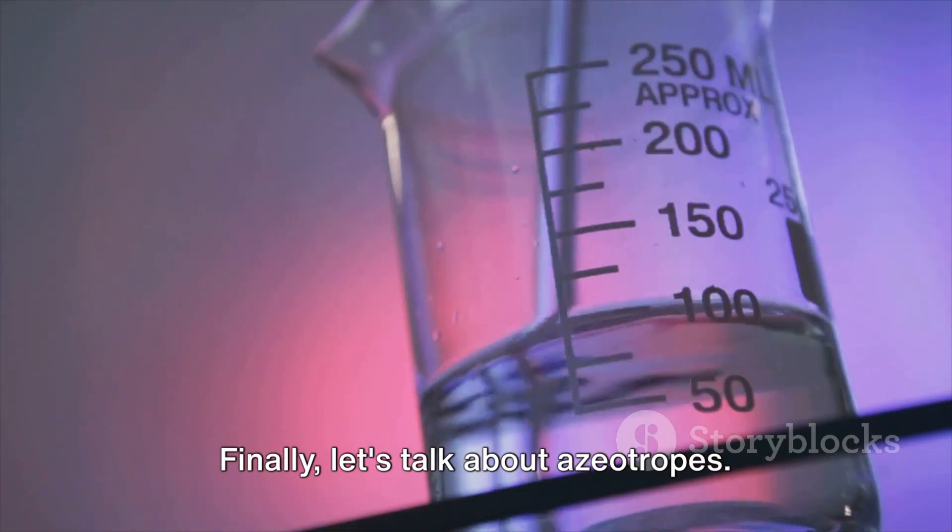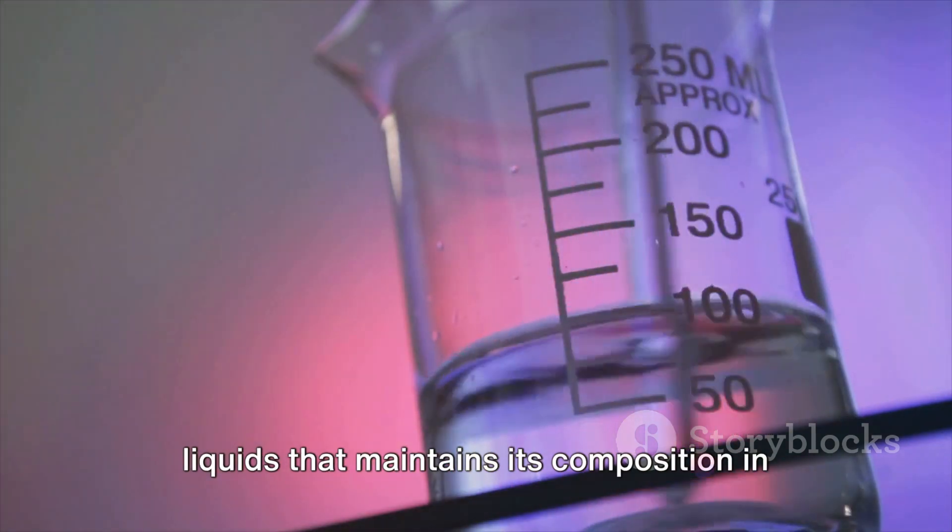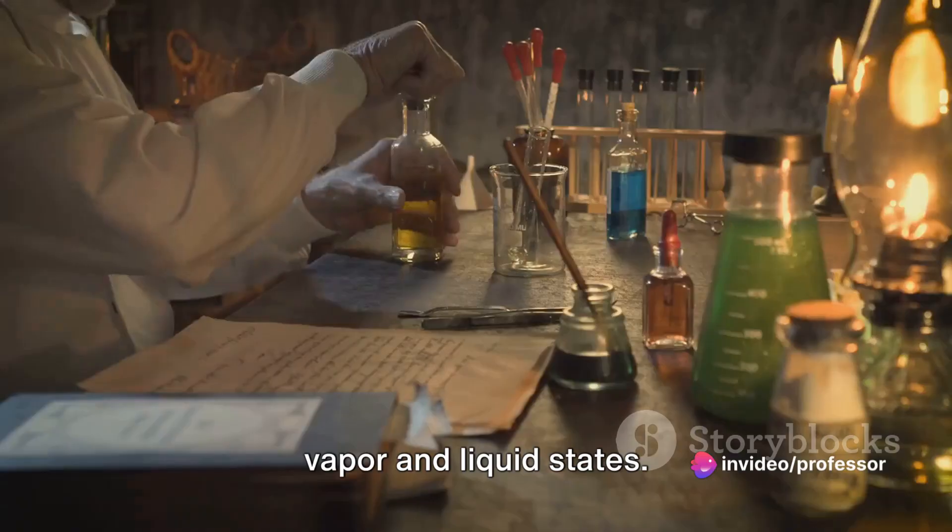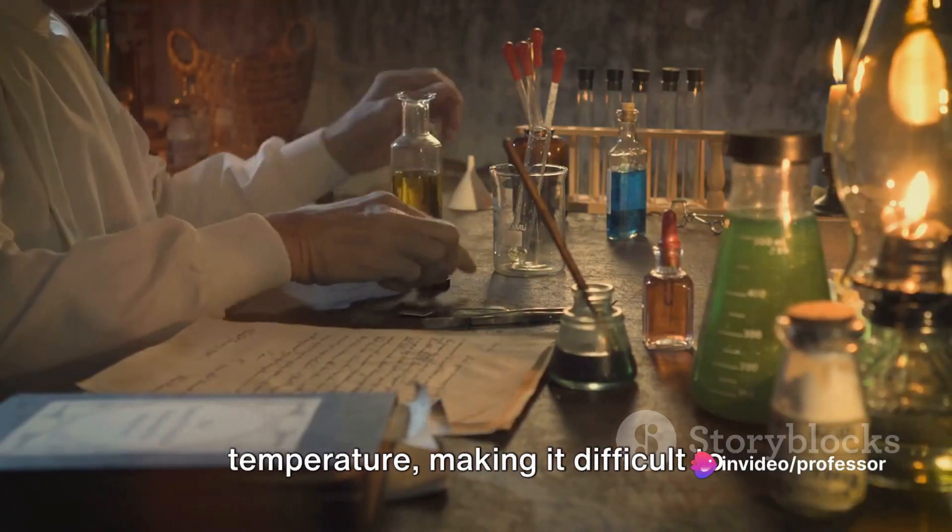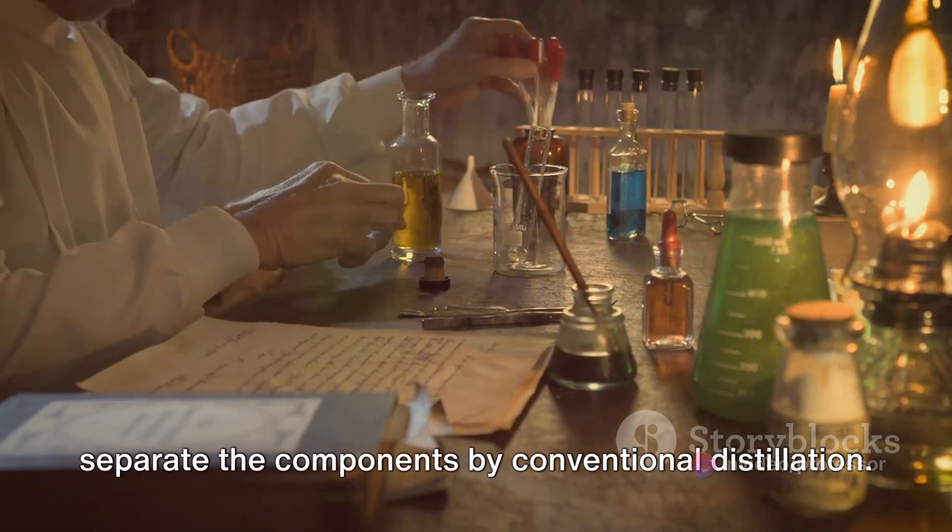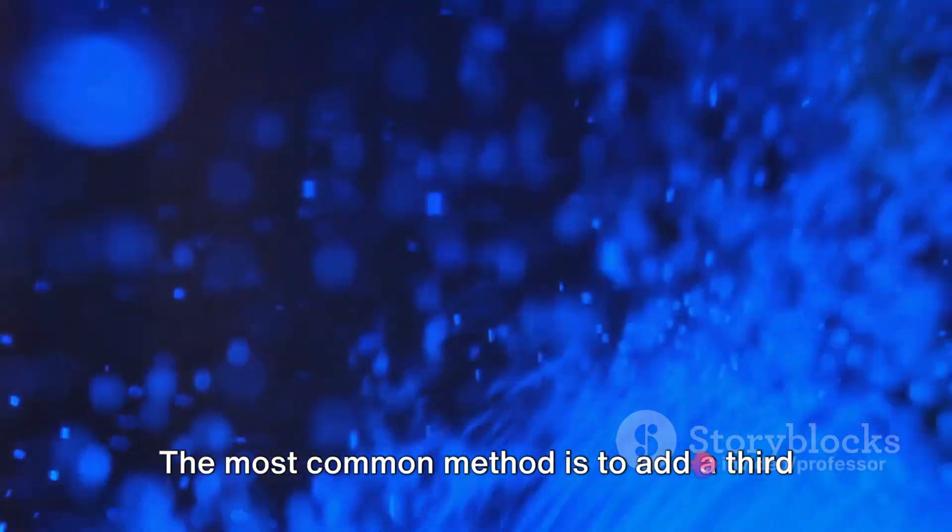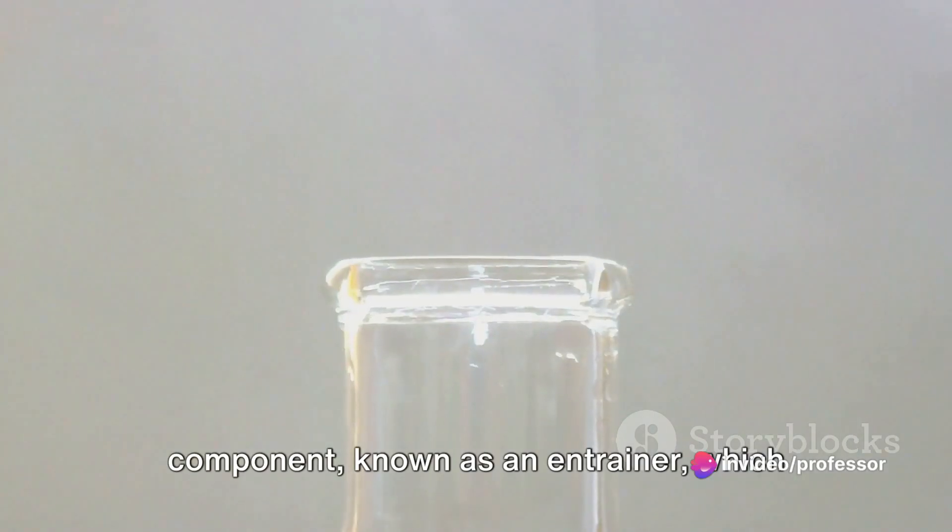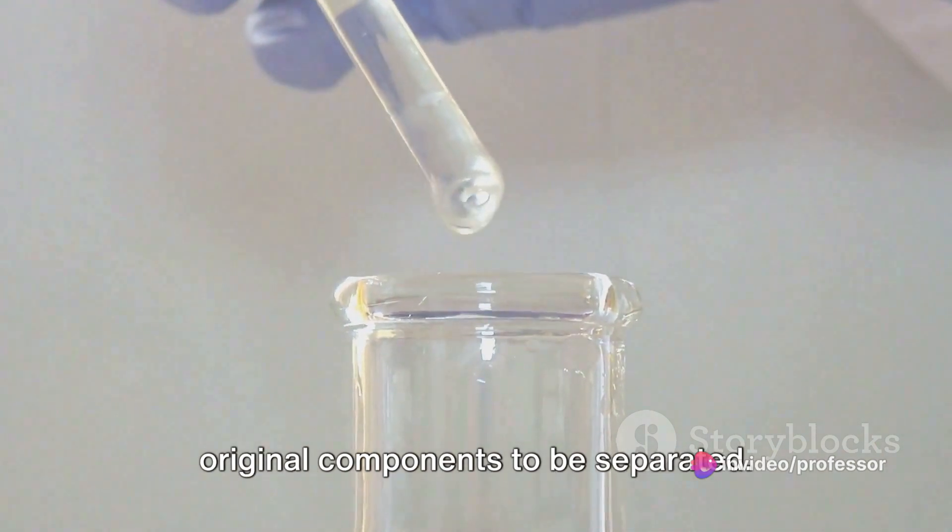Finally, let's talk about azeotropes. An azeotrope is a mixture of two or more liquids that maintains its composition in vapor and liquid states. This means it boils at a constant temperature, making it difficult to separate the components by conventional distillation. However, with some creativity, we can get around this problem. The most common method is to add a third component, known as an entrainer, which disrupts the azeotrope and allows the original components to be separated.